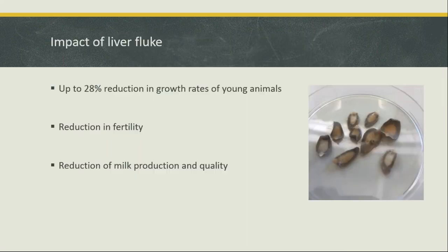The most dramatic impact of liver fluke is up to a 28% reduction in growth rates — that's huge. If you have growing steers that should be putting on two kilos a day on good pasture, knocking them back 28% takes 28% of profits away. You can see here fluke of all different sizes that are all the same age. Liver fluke also cause a reduction in female fertility — it takes longer to get pregnant, requiring more cycles, more AIs, or bulls staying in longer.